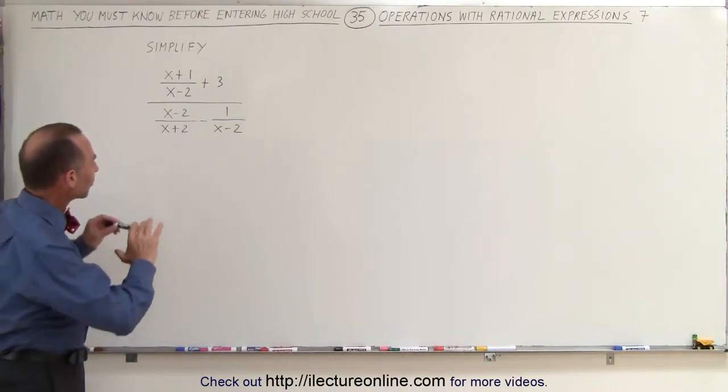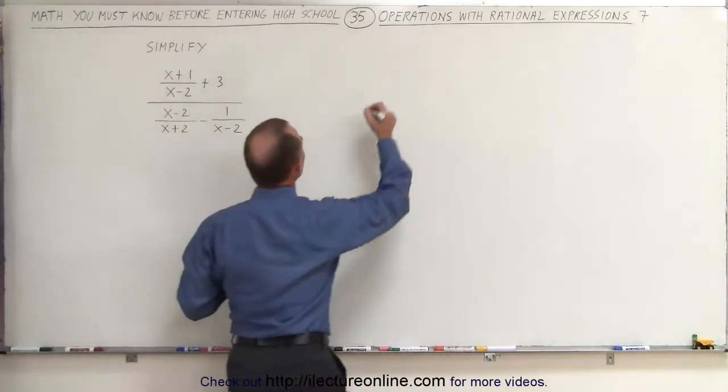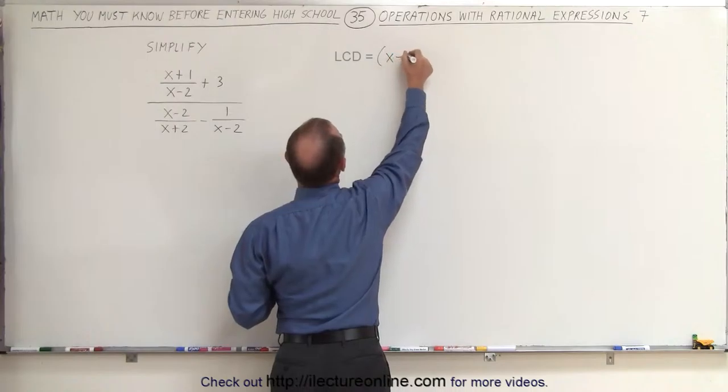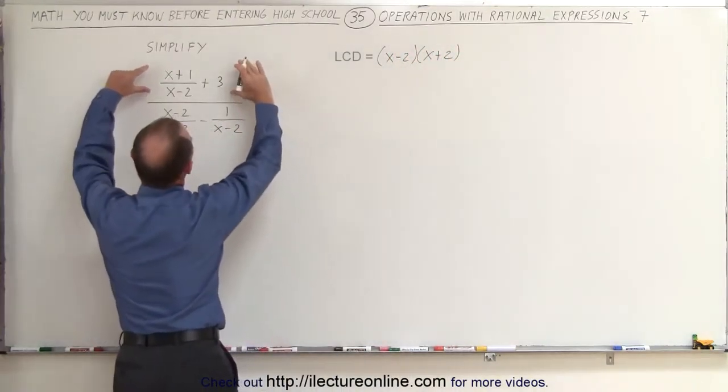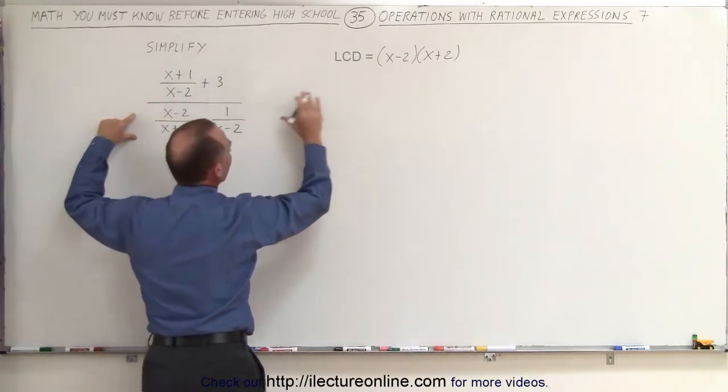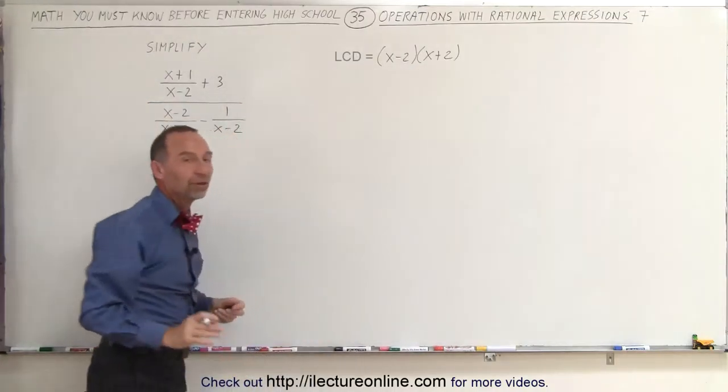The smallest common factor of all the denominators is the product x minus 2 times x plus 2. So what we're going to do is multiply the numerator and the denominator by the smallest common factor of all the denominators.